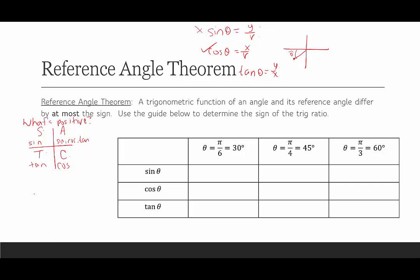Sine of 30° (π/6) is 1/2. Sine of 45° (π/4) is √2/2. Sine of 60° (π/3) is √3/2. Cosine is the mirror: cosine of 30° is √3/2, cosine of 45° is √2/2, cosine of 60° is 1/2. Tangent is sine over cosine: tangent of 30° is √3/3, tangent of 45° is 1, and tangent of 60° is √3.